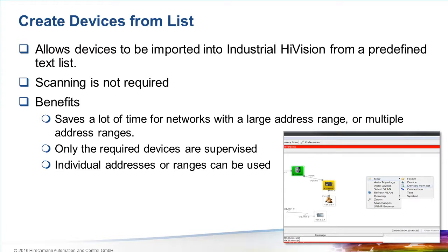The second method to discover devices was to scan the network. You can enter an address scan range, and Industrial HiVision will scan every address in that range to discover and identify network devices. That works well on smaller networks. On larger networks, it's less practical.